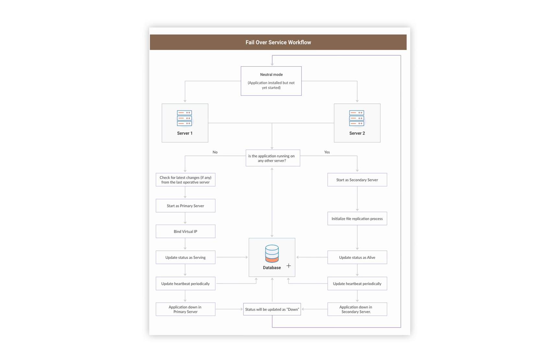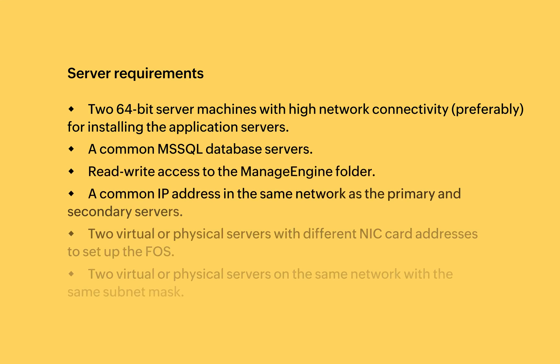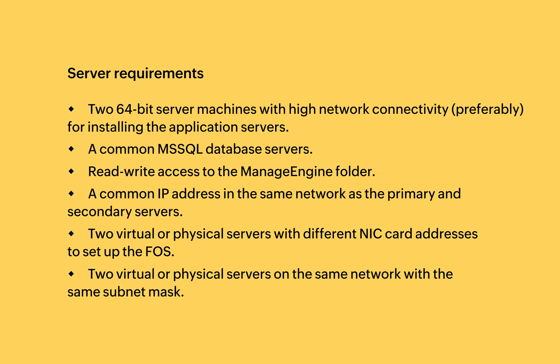This is a simple diagram that explains how the failover service works on a newly configured application. Please make sure the following server requirements are in place to set up an effective failover service: two 64-bit server machines with high network connectivity for installing the application servers, a common MS SQL database server, and a common IP address in the same network as the primary and the secondary servers.